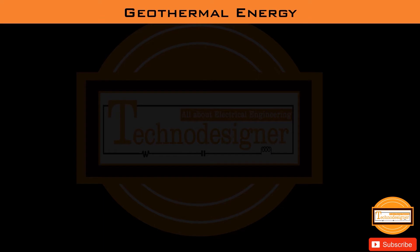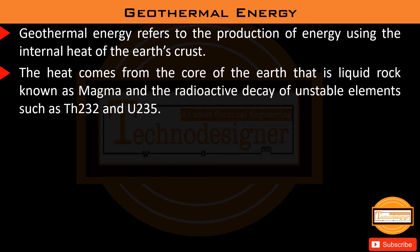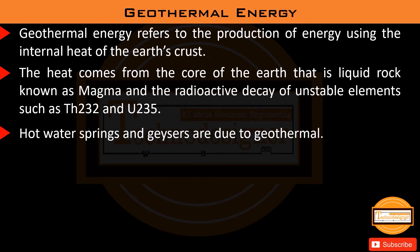Geothermal energy refers to the production of energy using the internal heat of the Earth's crust. The heat comes from the core of the earth — liquid rock known as magma — and from the radioactive decay of unstable elements such as thorium-232 and uranium-235. Hot water springs and geysers are examples of geothermal phenomena.